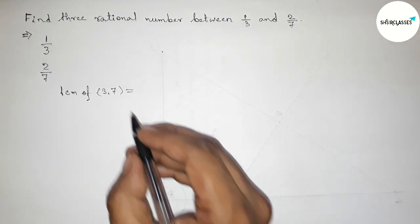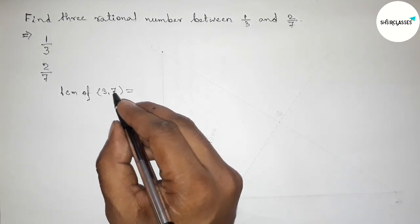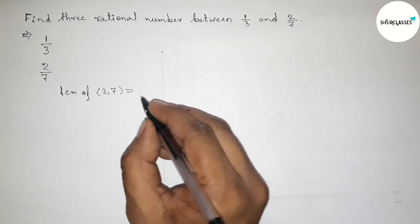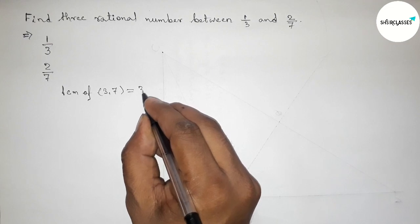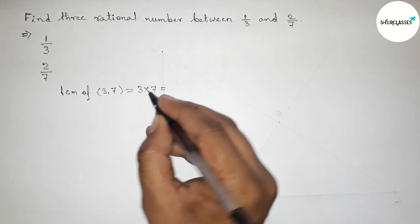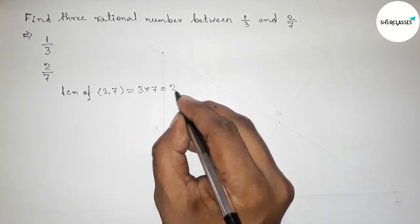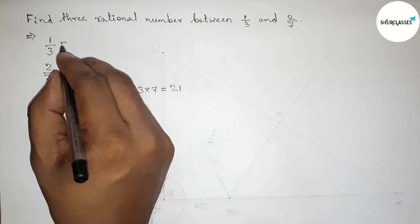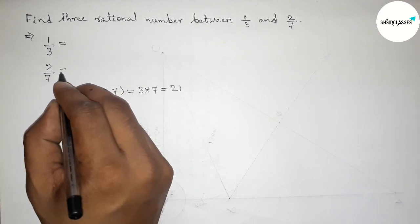Finding the LCM of 3 and 7 — since 3 and 7 are prime to each other, their LCM will be their product: 3 into 7 equals 21. So we have to make both denominators equal to 21.